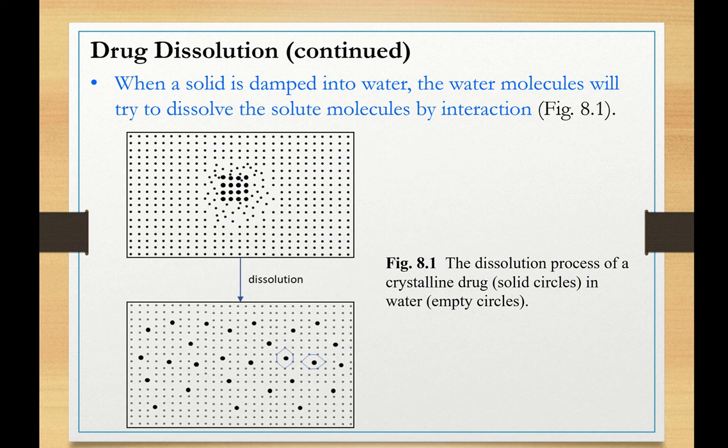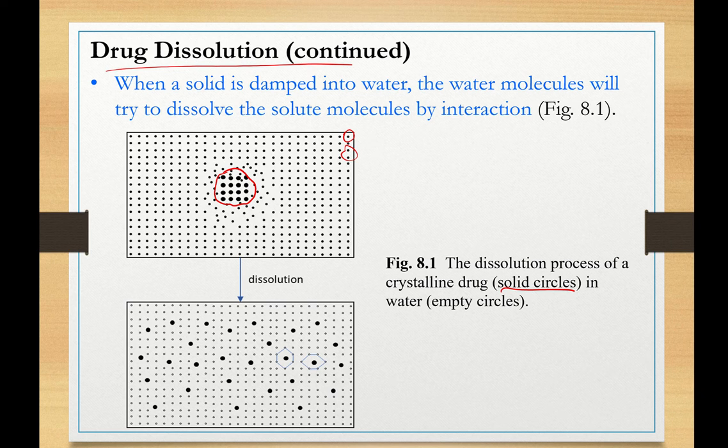Here we have a schematic of drug dissolution. What you see in the top panel, the solid circles are the solutes, and the solvent molecules are the smaller empty circles. The process of dissolution starts with collision of solvent molecules with the solute molecules. Upon collision, these collisions provide the kinetic energy needed to break the solute-solute and solvent-solvent bonds. Bond breaking requires energy.